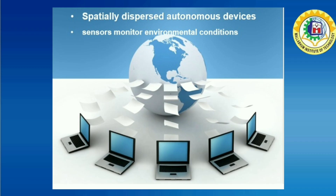A wireless sensor network is a wireless system consisting of specially dispersed autonomous devices using sensors to monitor physical or environmental conditions. A wireless sensor network system incorporates a gateway that provides wireless connectivity back to the wired world and distributed nodes.